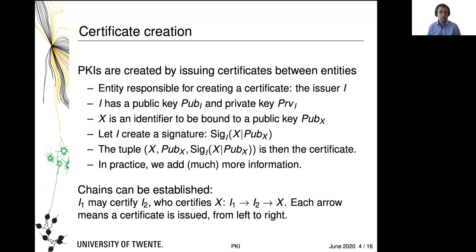Note that you can actually also create chains. For example, you might have an issuer I1 who may certify I2, who then certifies X. Then you have a chain I1 to I2 to X. Each arrow would imply a certificate is issued, reading this from left to right.